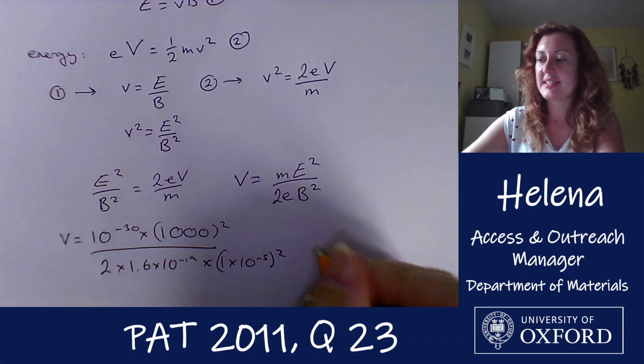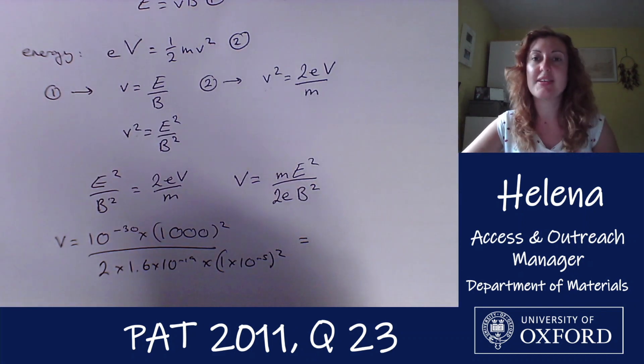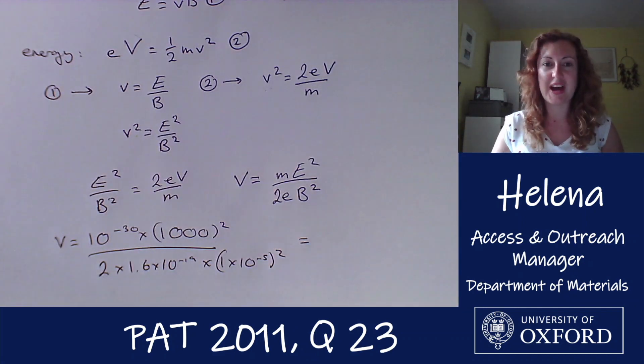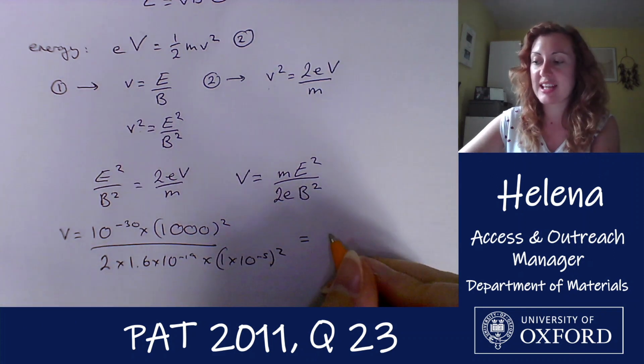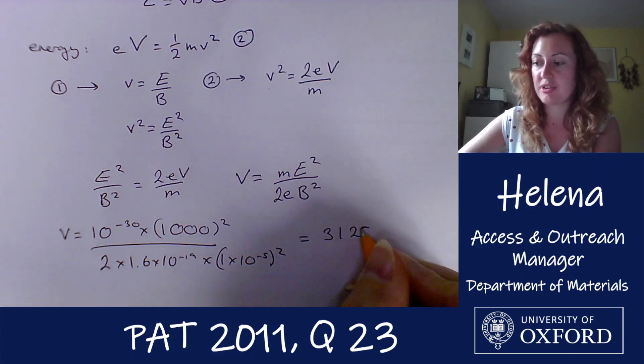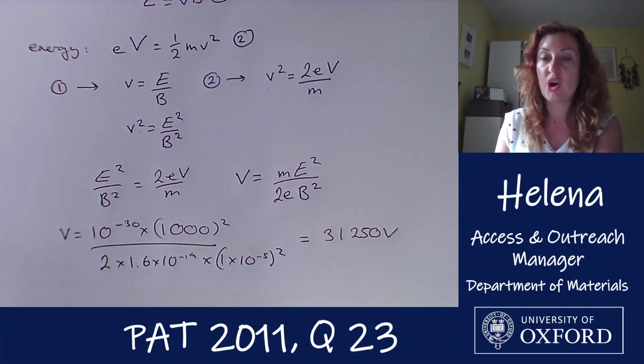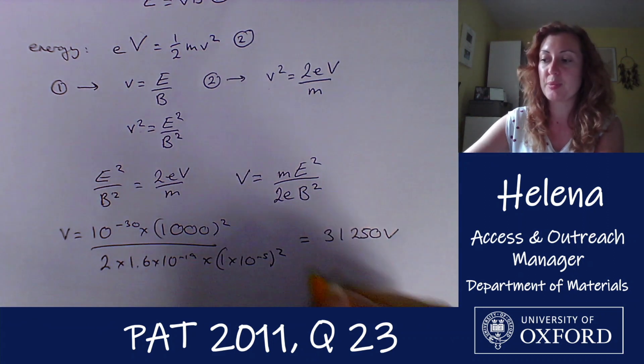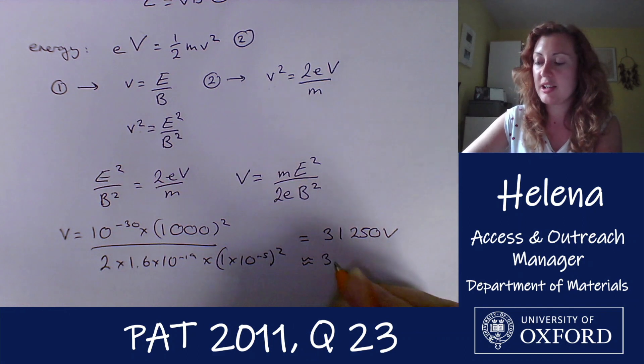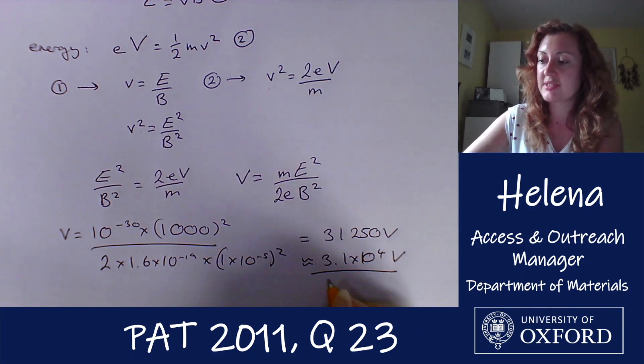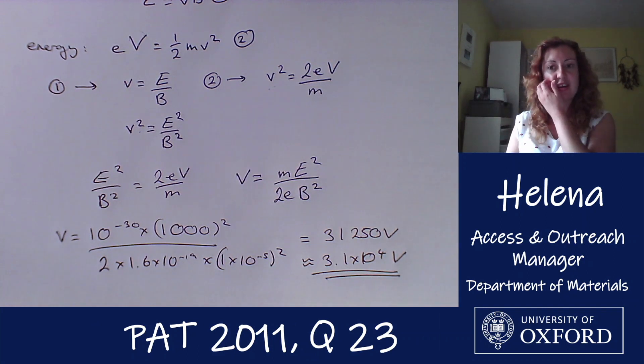And if we put this into our calculators, because we can use calculators now for the PAT, we find that this gives us a value of 31,250 volts. Or if we want to write this in standard form and to an appropriate number of significant figures, we can write that as 3.1 × 10^4 volts. And that is our answer.